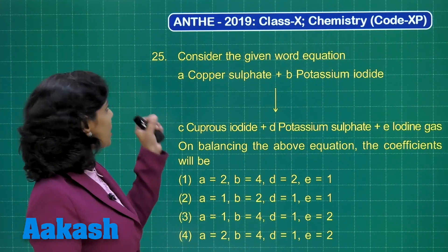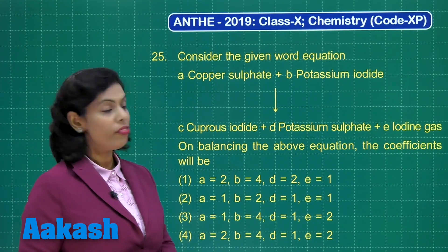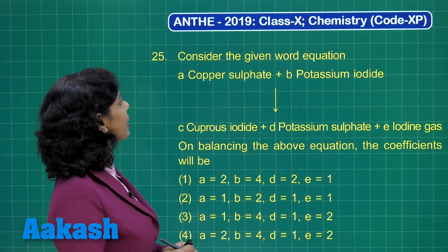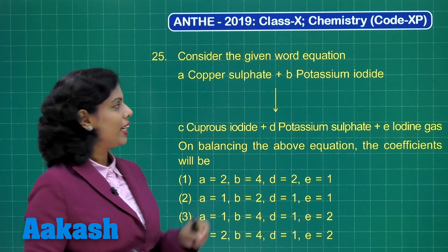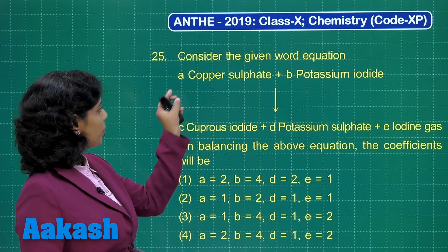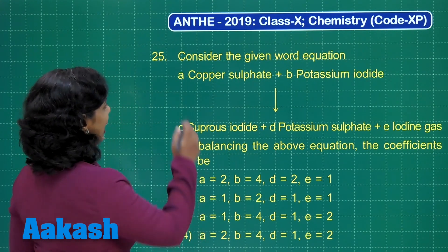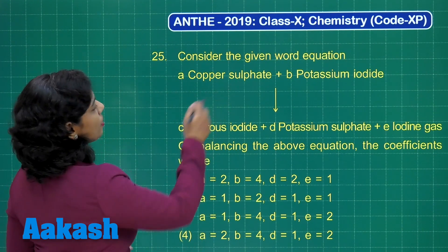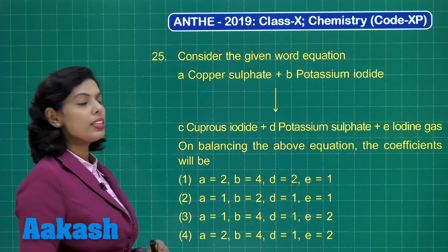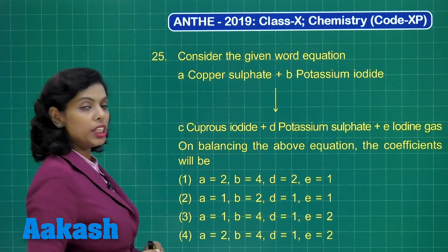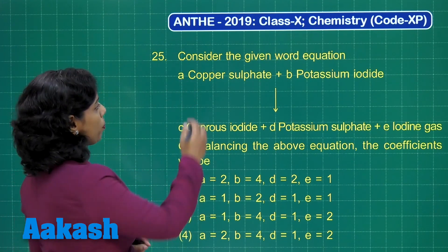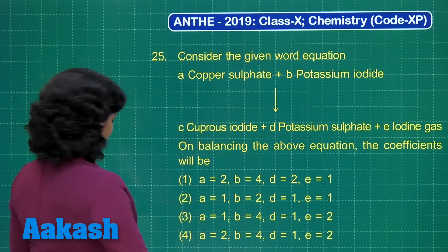Here is question number 25. Consider the given word equation. In this word equation, first it's written A copper sulfate — A is the coefficient and copper sulfate is what you are taking.